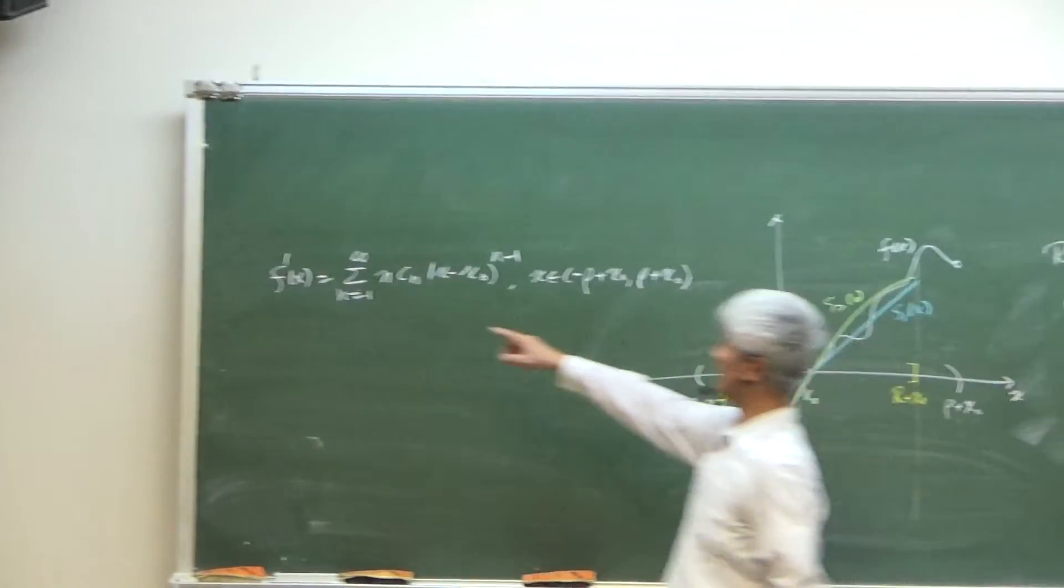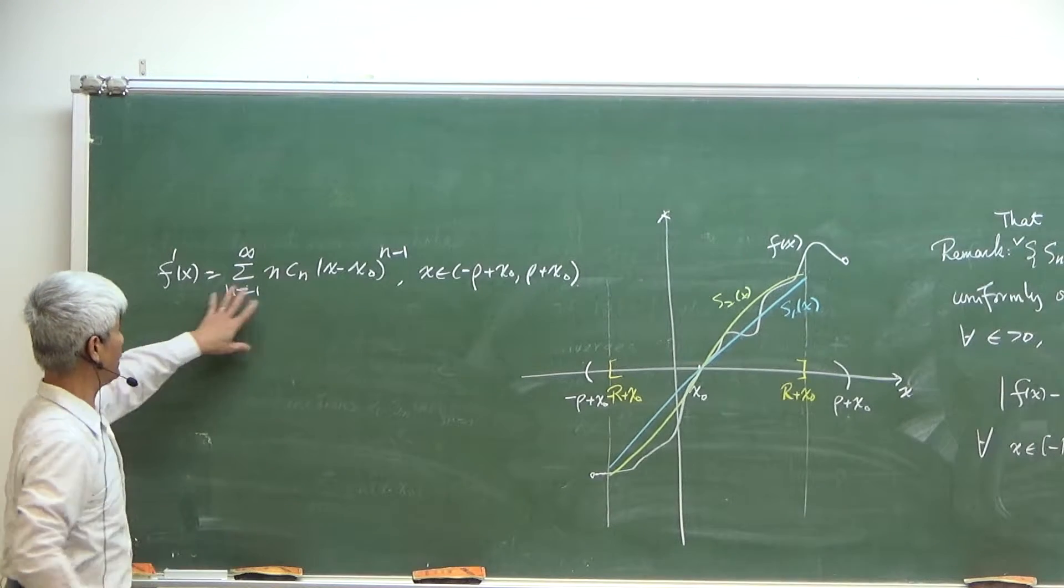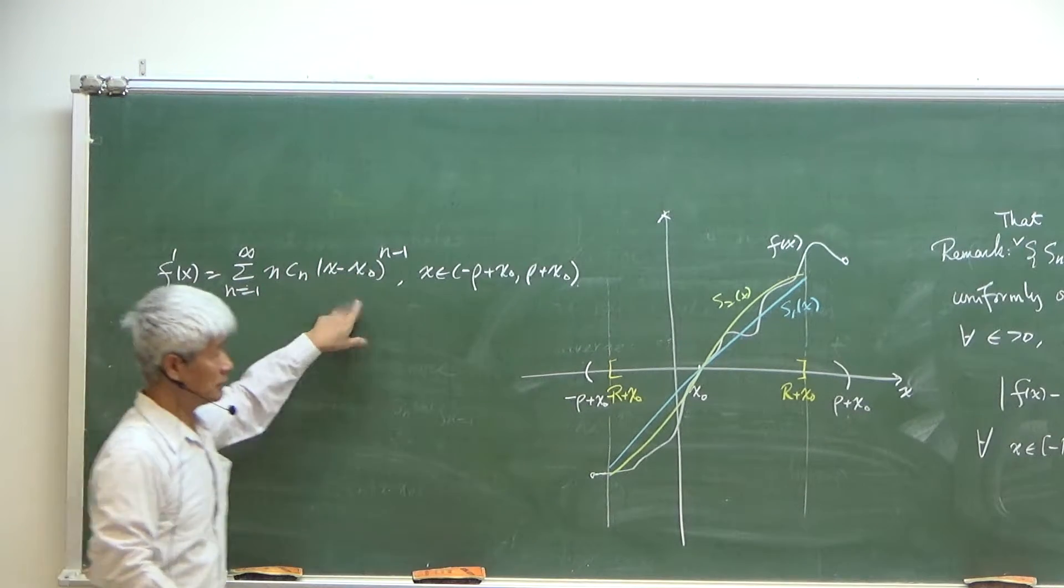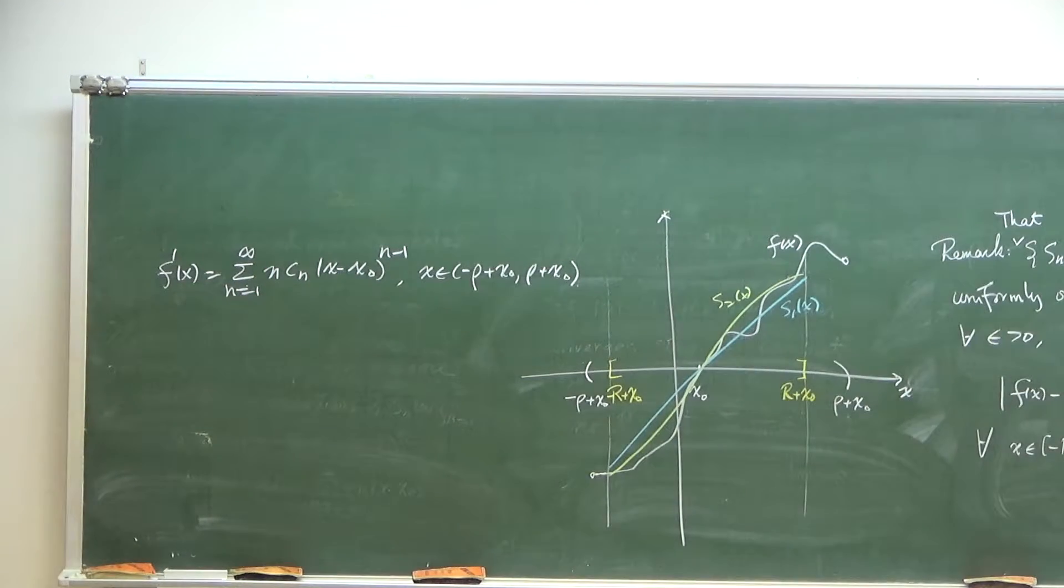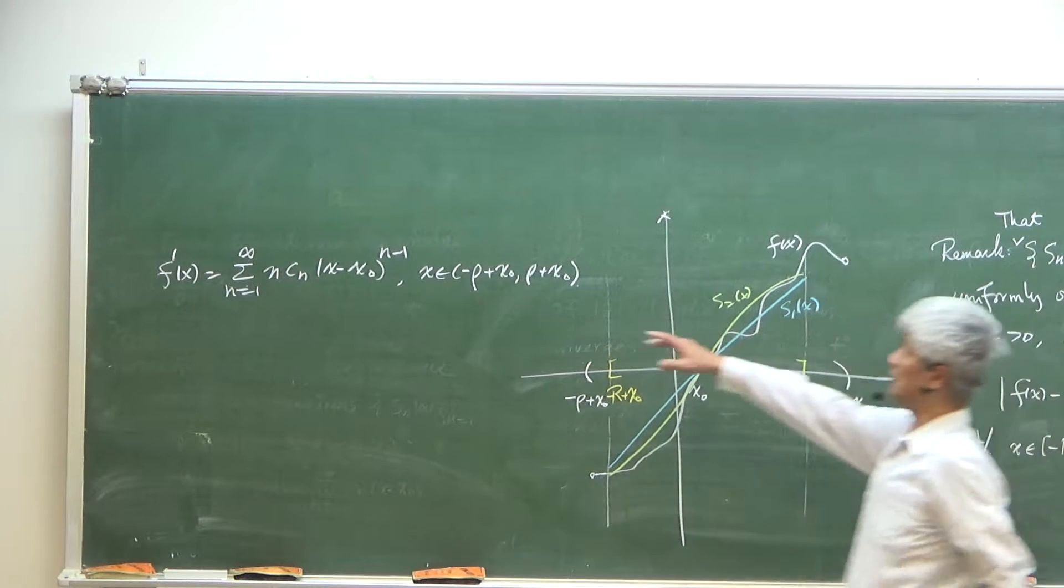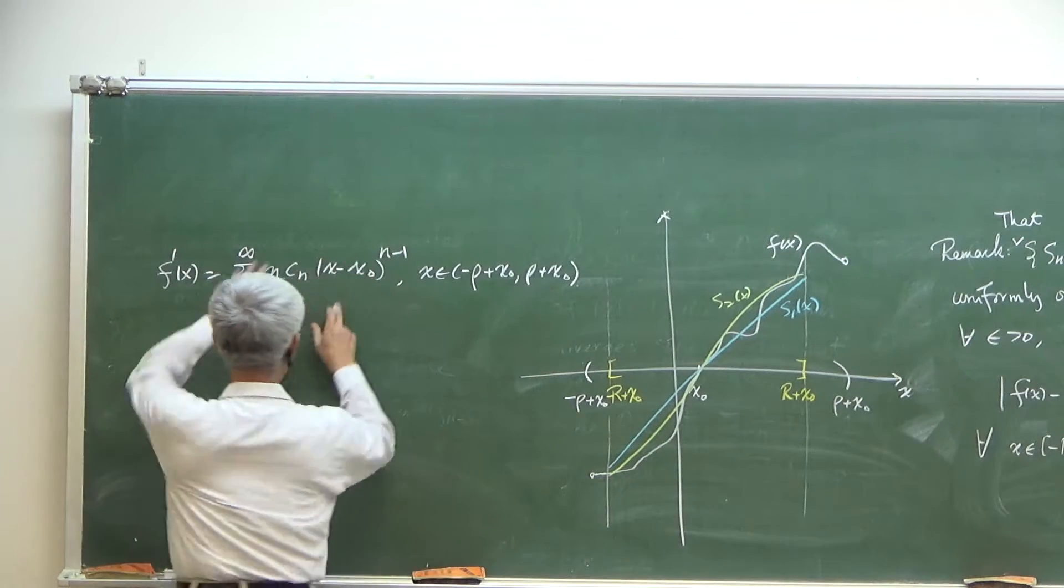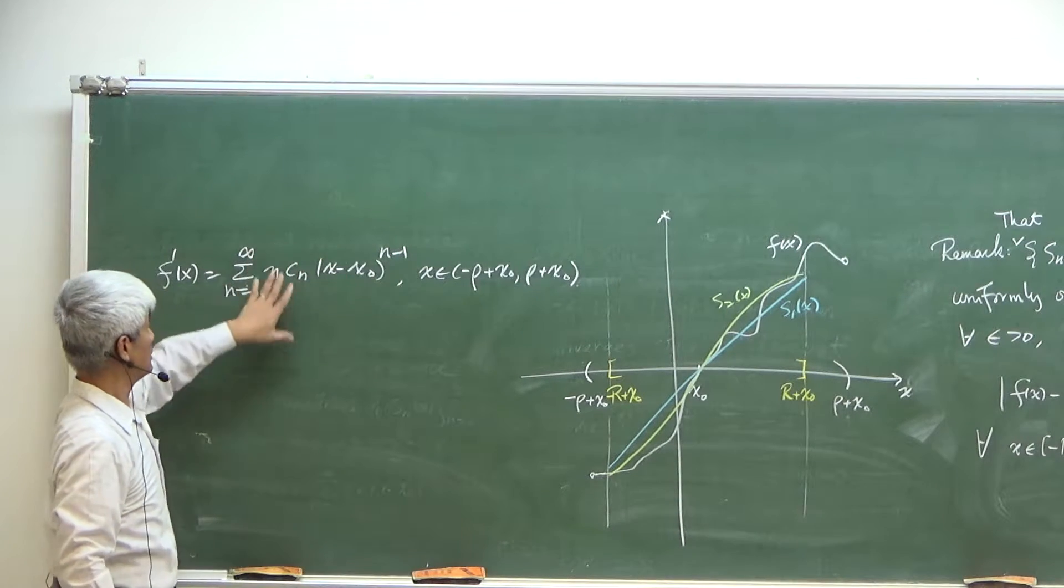And f prime can be obtained by differentiating each term here, so you can differentiate each term and it's very simple, right? So this is the differentiation of the nth term right here.